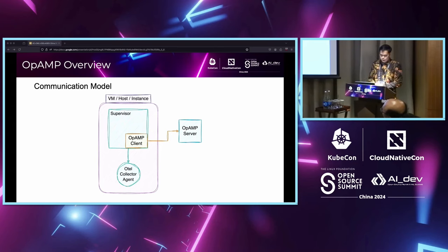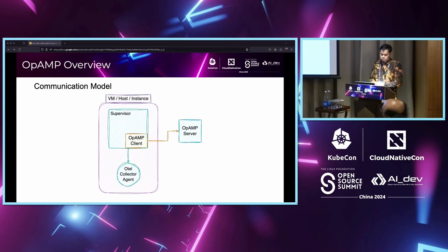For the communication model, we have set up OPMP with two approaches. In our instances or VMs, we use a supervisor. OPMP clients connect to the OPMP server on behalf of the OpenTelemetry agents — typically a single server accepts connections from many clients. That's why agents are identified by unique instance identifiers, called instance UIDs, which are recorded in each message sent from the agent via the client to the server and back.